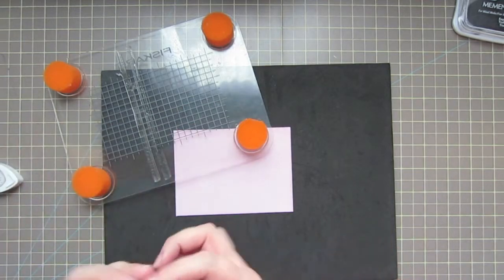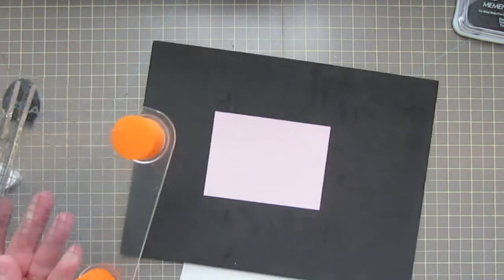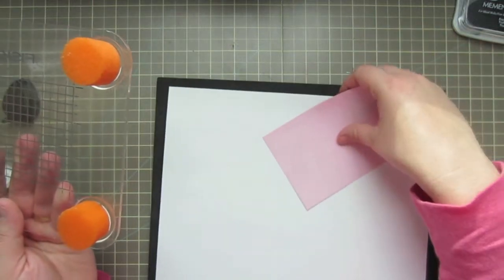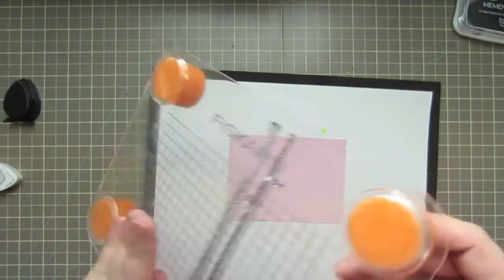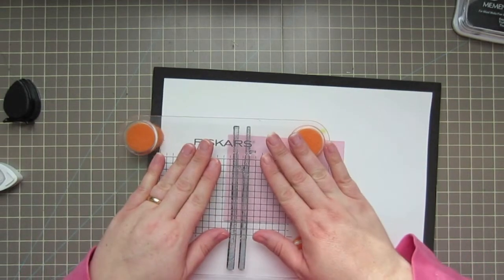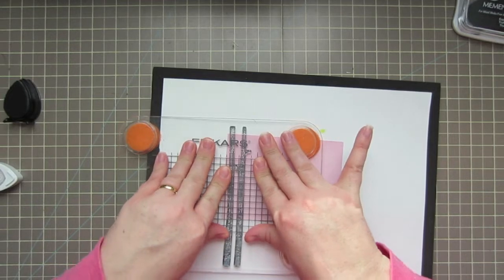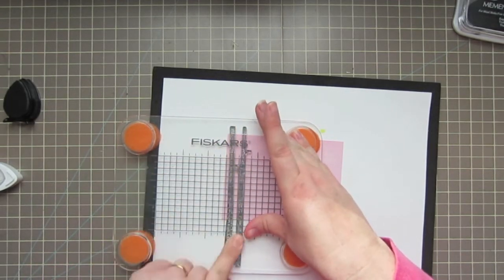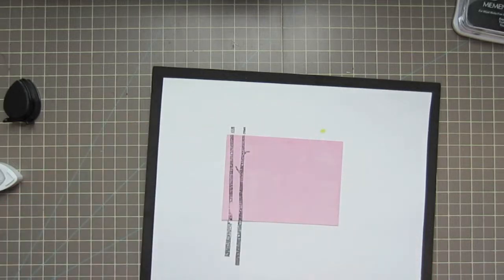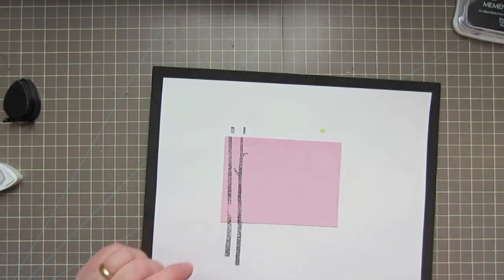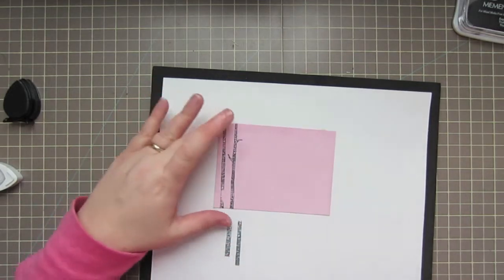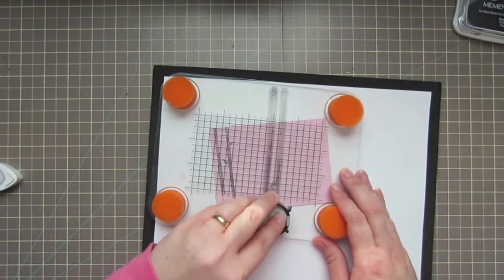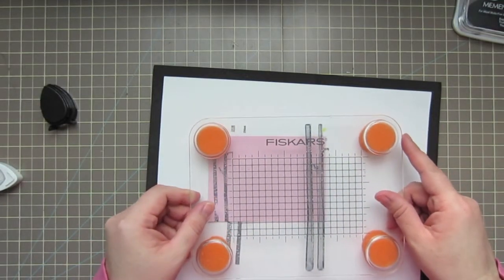I'm going to put down a piece of scratch paper underneath just so I don't get ink all over my foam pad. I'll go ahead and line those trees up how I want them, press down really carefully, and make sure that I get a really good impression. Okay, looks like I missed a little bit right there. We'll have to see if we can fix that or cover it up somehow. And then line them up over on this side.